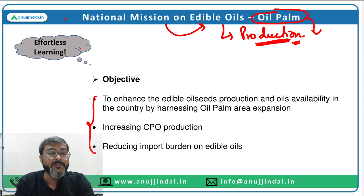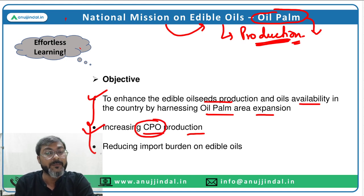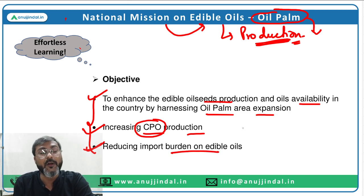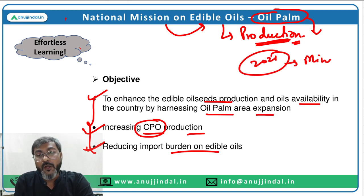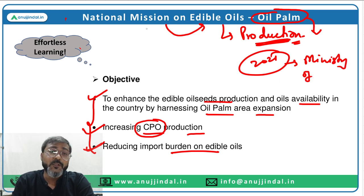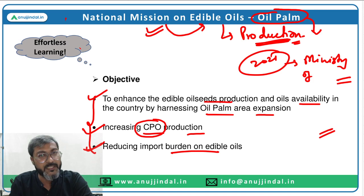The full objectives are: to enhance edible oil seeds production and oils availability in the country by harnessing oil palm area expansion; to increase crude palm oil (CPO) production; and thereby to reduce the import burden on edible oil. A large proportion of edible oil is currently imported, and to reduce that import burden, the government launched this scheme in the year 2021 under the Ministry of Agriculture and Farmers Welfare.